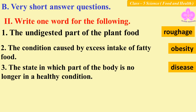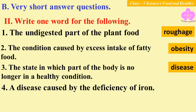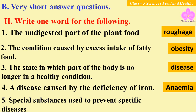Number four: a disease caused by the deficiency of iron. Answer: anemia. Number five: special substances used to prevent specific diseases. Answer: vaccination.